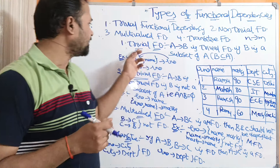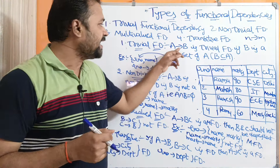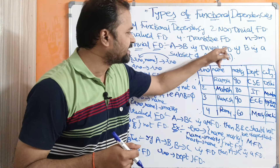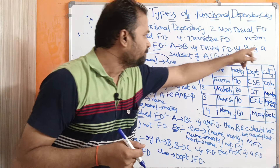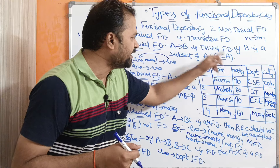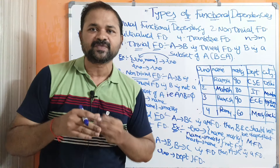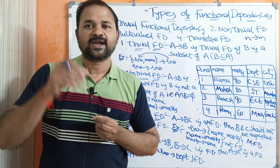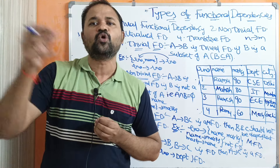First, let us discuss about trivial functional dependency. A→B, meaning A determines B, is a trivial functional dependency if B is a subset of A — subset is denoted by the ⊆ symbol. Here, A means one or more attributes, and likewise B means one or more attributes.